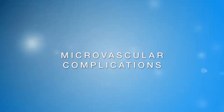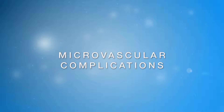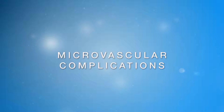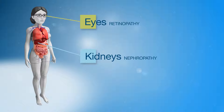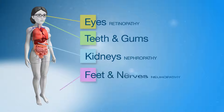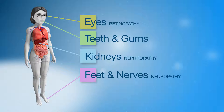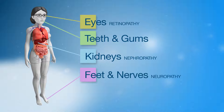Diabetes can damage the smaller blood vessels and nerves in the body. This damage can affect various parts of your body including the eyes, kidneys, teeth and feet. Damage to the eyes is called retinopathy, damage to the kidneys is called nephropathy, and damage to the nerves is called neuropathy.